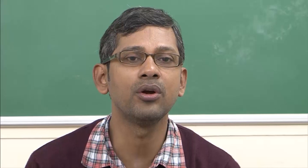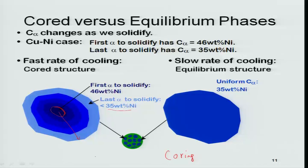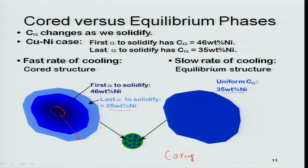By equilibrium I mean slow cooling, and by non-equilibrium I mean fast cooling. If we take a Cu-Ni system and solidify an alloy of 35 weight percent nickel using a very slow rate of cooling — equivalent to equilibrium cooling — we will get a uniform solid of the same composition as we started with. This is because slow cooling keeps the solid-plus-liquid mixture at each temperature for sufficiently long time, so diffusion can occur and anneal out all compositional inhomogeneities.